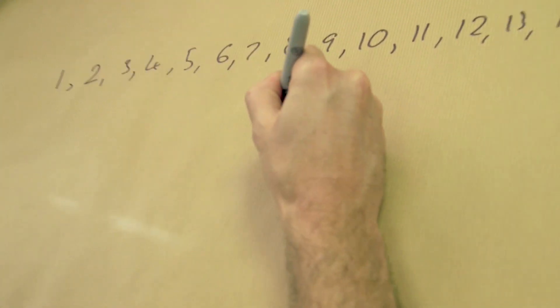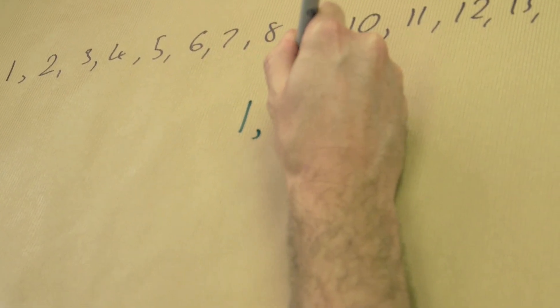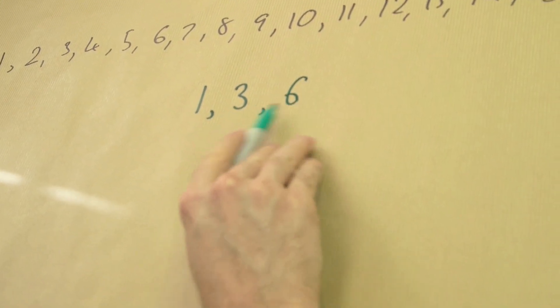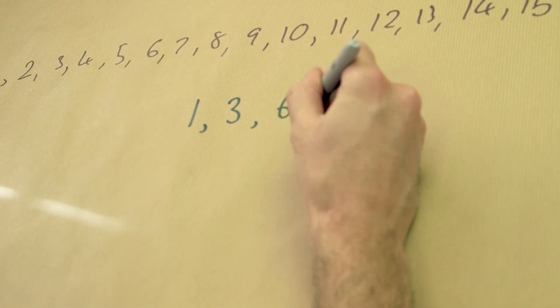We can put 1 there, and then next to it we could put 3. Okay, that's pretty good, because 1 plus 3 is 4, that's a square number. I could check 6 here, because 3 plus 6 is 9, that's a square number.